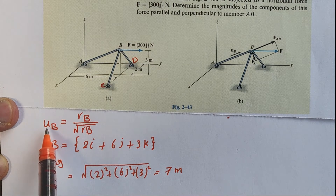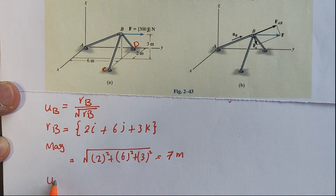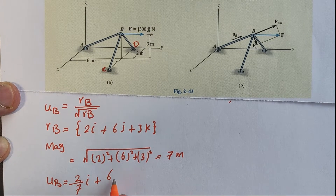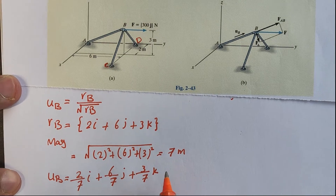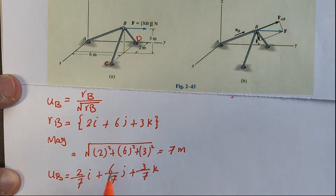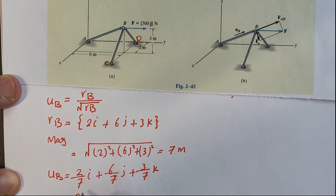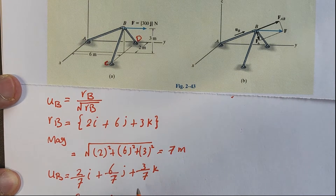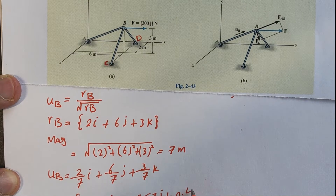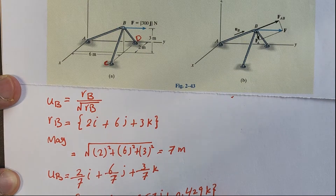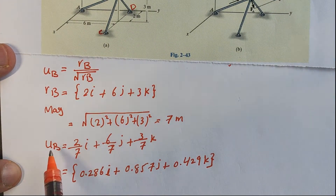Now it's easy to find the unit vector: û_B = (2/7)i + (6/7)j + (3/7)k. Solving these fractions gives û_B = 0.286i + 0.857j + 0.429k. This is our unit vector û_B.